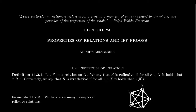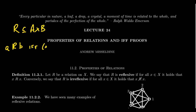We introduced the set-theoretic definition of relations in lecture 23. As a quick summary, we say that R is a relation on two sets A and B if R is a subset of their Cartesian product. We think of it as: element A relates to element B if and only if their ordered pair belongs to the relation itself.